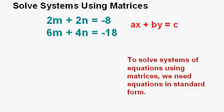For solving using matrices you need to have a system of equations in standard form, such as 2m plus 2n equals negative 8 and 6m plus 4n equals negative 18, which means they are in the form ax plus by equals c. Letters other than x and y do not make a difference and should not bother you.